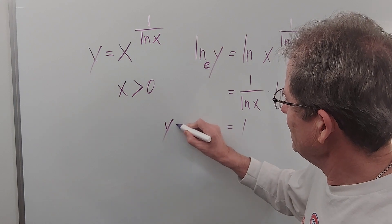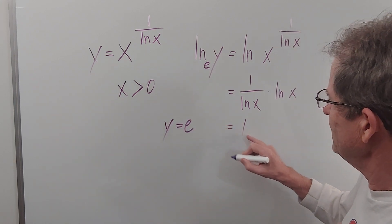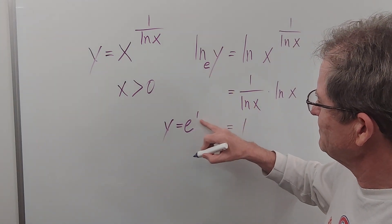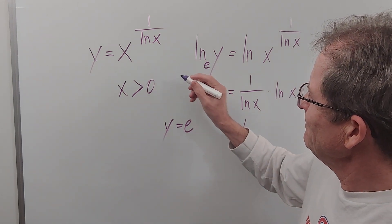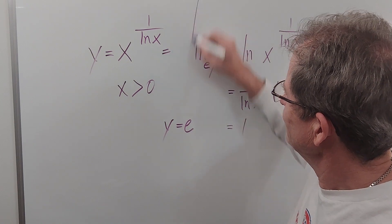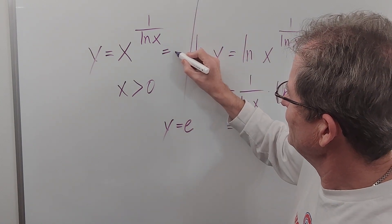So y would have to be e, because 1 is the exponent to which the base, e, must be raised to give that number. Of course, we don't need the exponent. So amazingly, that is equal to e.